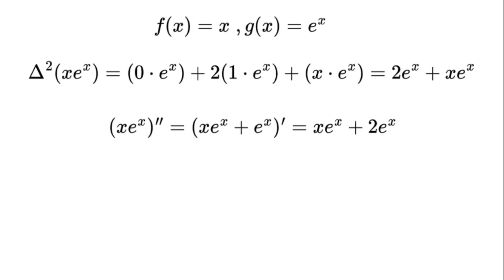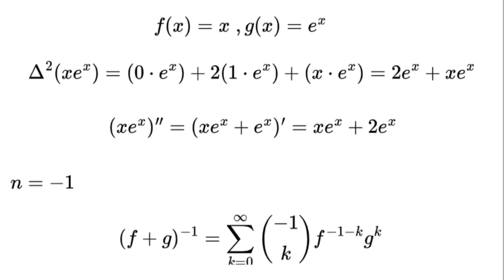Time to flip things around and explore antiderivatives, where we set n equals negative 1. This is where binomial operator calculus gets really cool. The binomial expansion for f plus g to the power of negative 1 gives us an infinite series.